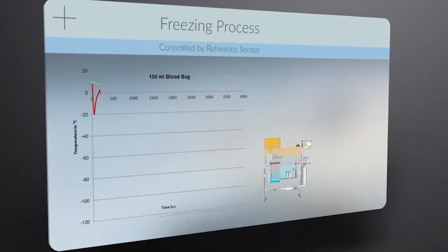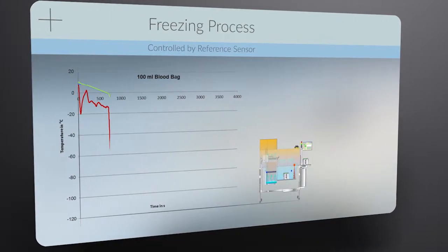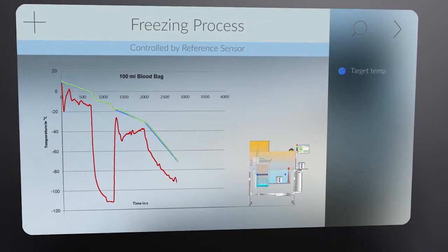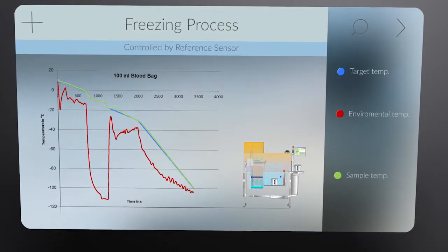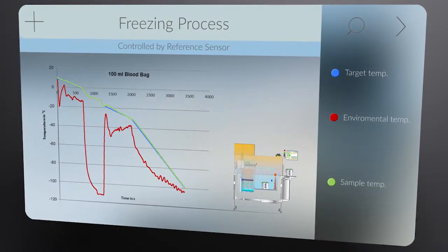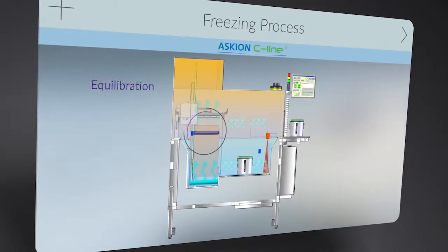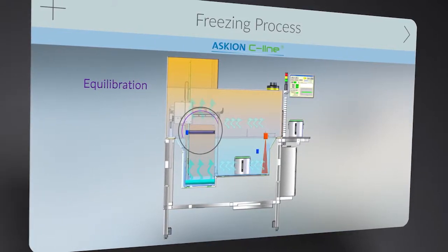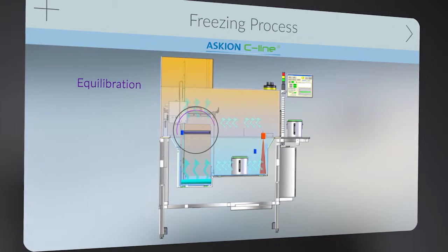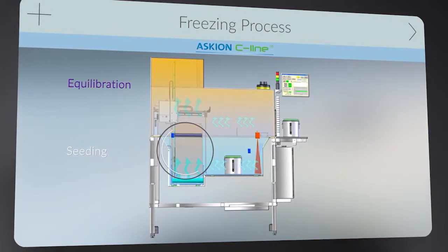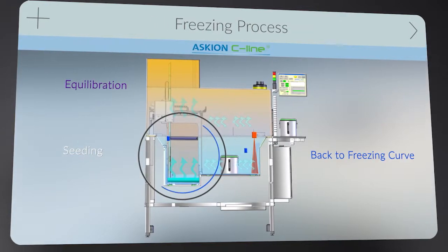The system achieves maximum conformity between the target and sample temperatures by using defined quick freezing stipulations with the help of a sample reference sensor. You can deliberately control the seeding process with the Ascheon C-Line Workbench. A supercooling facility prevents any temperature fluctuations in the samples and the latent crystallization heat is discharged in a controlled manner.